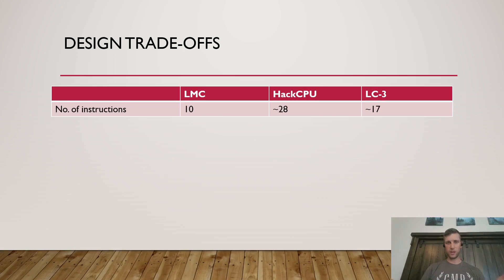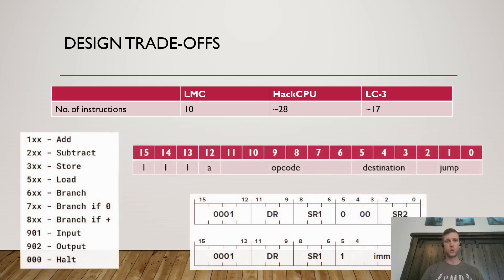What I do want to do for the next couple minutes though is I'll dive into a couple of these. Number one, you can imagine that the number of instructions between these three computers is very different. And in fact, you don't need to imagine it. We kind of know this at this point. I've got the little man computer 10 instructions kind of limited in what it can do. My hack CPU is here in the middle about 28. And if you've seen that video, that's kind of ish there. There are potentially more. We've got a lot of potential opcodes and destinations and jumps that we could combine to form various instructions and the LC3 about 17.